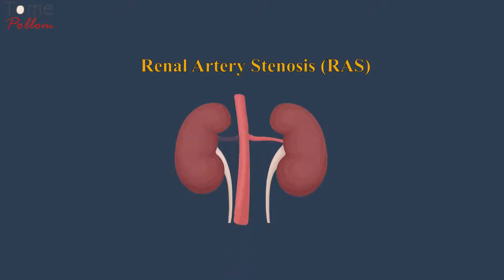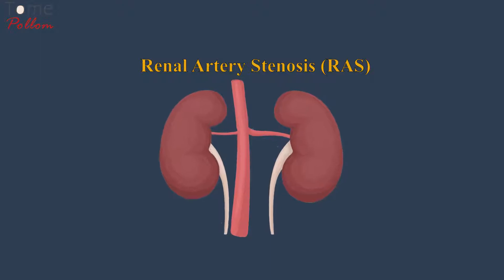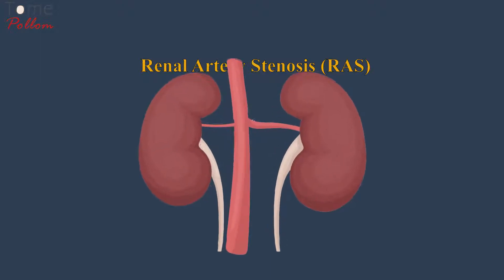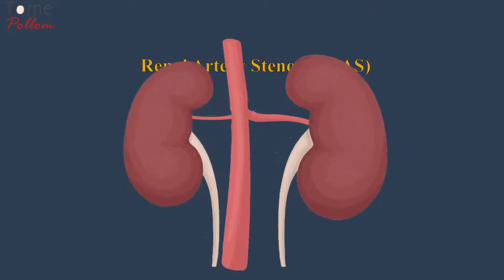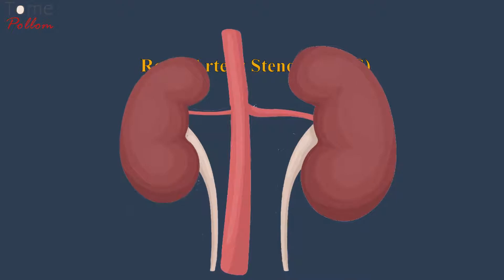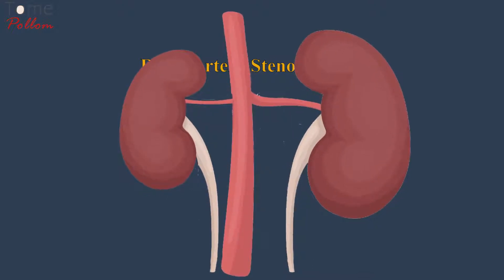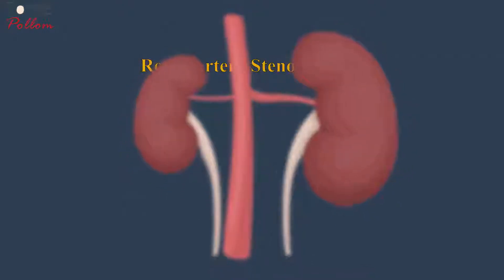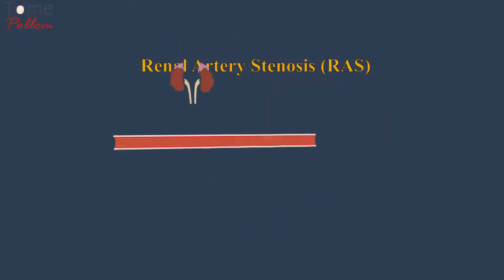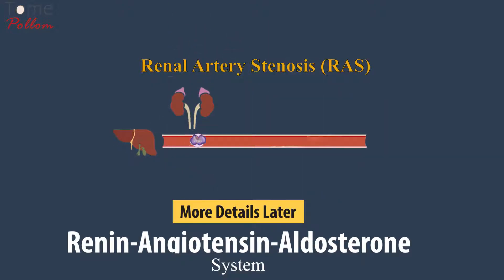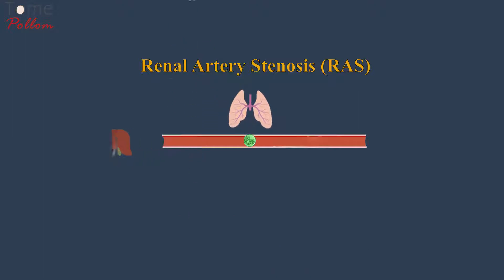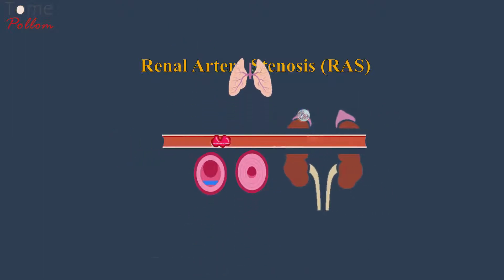Renal artery stenosis. A stenosis, or narrowing of the renal artery, reduces blood flow to the kidney being supplied by that narrow artery. This will deprive it of oxygen and nutrients, making it believe that the body is dehydrated or hypovolemic, and as a response, triggers the kidney to activate the renin-angiotensin-aldosterone system, or RAS, which ultimately constricts arterioles and increases renal water absorption.